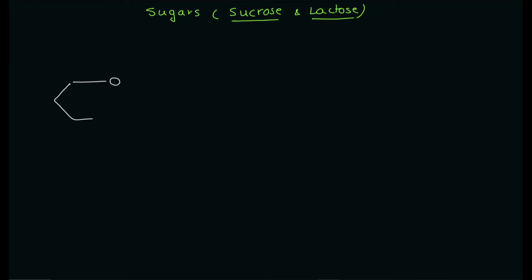So what is sucrose? It is the table sugar we use in our drinks. What is the structure of that molecule? Is it just glucose only, or just fructose? It's neither — it's the combination of glucose and the fructose molecule.